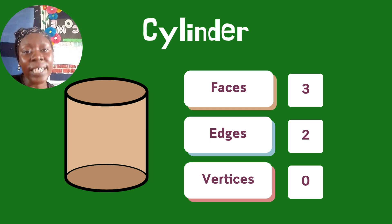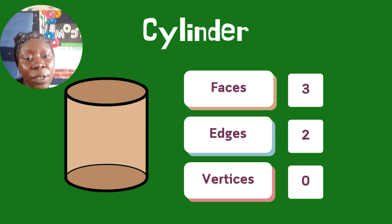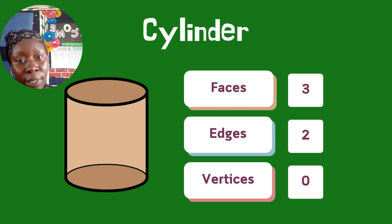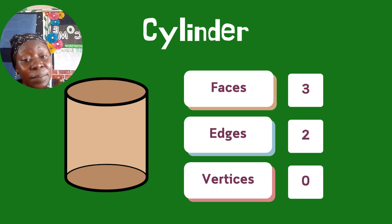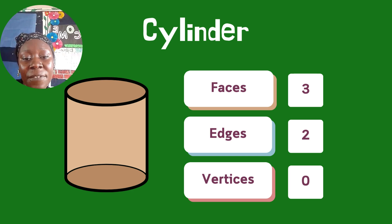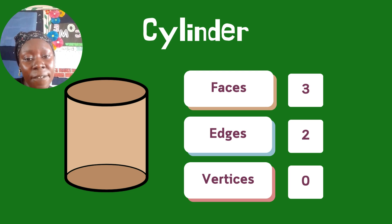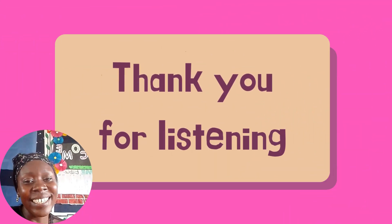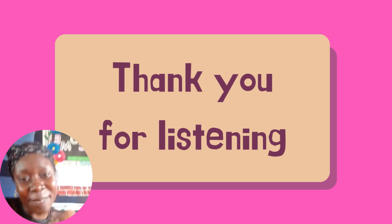We talked about the cube, cuboid, sphere, cone, and cylinder. Remember, a sphere does not have any edges or vertices — it only has one face. I hope you understand this lesson. Thank you, and have a wonderful time at home. Bye!